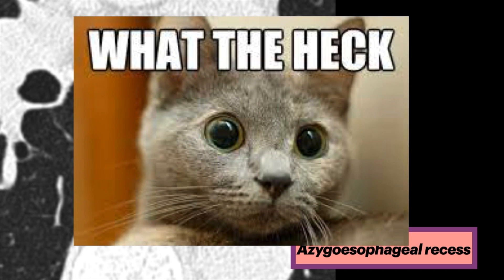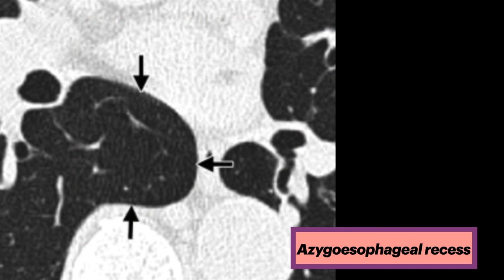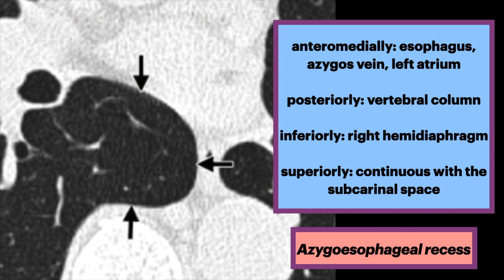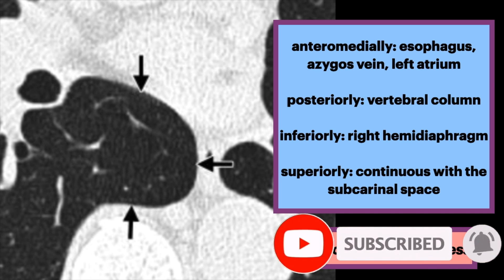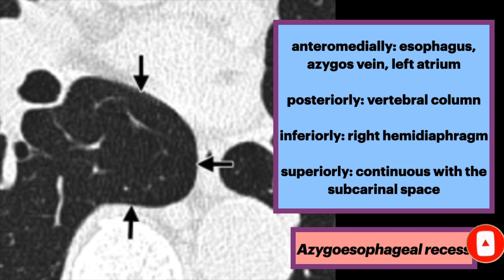What is the azagoesophageal recess? It's a region that is bounded medially by the esophagus, azygous vein, and left atrium, posteriorly by the vertebral column, inferiorly by the right hemidiaphragm, and superiorly it's continuous with the subcarinal space.